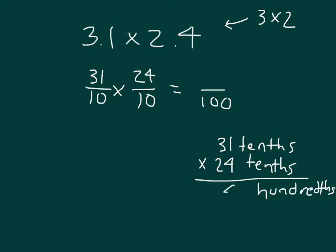All we need to do is multiply 31 times 24. 4 times 1 is 4, 4 times 3 is 12. I will place a 0. 2 times 1 is 2, and 2 times 3 is 6. Adding those together, I get 744 hundredths.